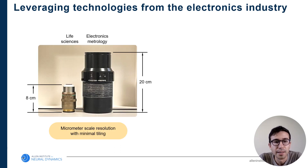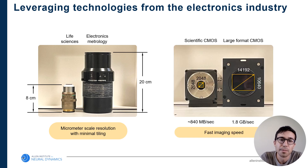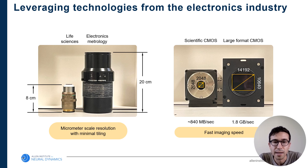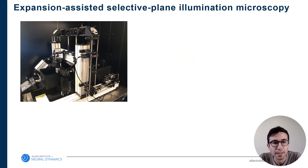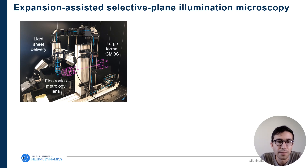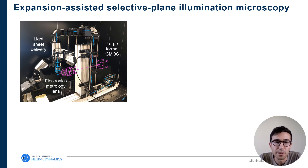Looking at these in the lab: on the left, I'm showing arguably one of the largest life science objectives, but it's actually dwarfed by one of these electronics metrology lenses we've purchased and are using in our new systems. Similarly with the camera, scientific CMOS cameras with about four megapixels have been the standard in light sheet microscopy for a while, but there are large format CMOS sensors available in the metrology space that have, for example, 151 megapixels. These large format CMOS sensors can actually go even faster than scientific CMOS sensors in terms of pixels per second captured.